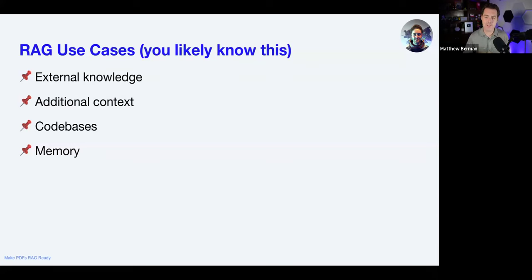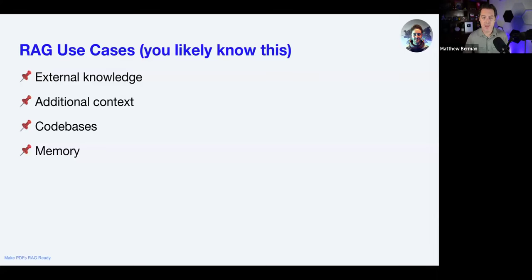Then there's memory — especially if you're building a personal AI system or even a business AI system, you want it to learn about you. You want to develop almost like a shorthand. When you're working with your AI, you don't want to have to explain everything every single time. The simplest way to do that is through a system message, but system messages are limited in context length. So as you're interacting for days, weeks, years with an AI, you want it to learn about you, learn about your business. That is what RAG is incredibly valuable for.